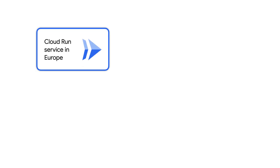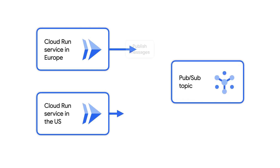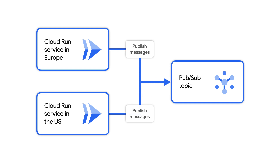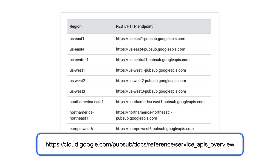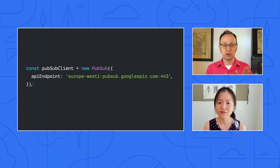Excellent. Now for the fourth and final question. My system has one Cloud Run service running in Europe and another running in the US, and both publish ordered PubSub messages to the same topic. Will ordering still work? Yes. If you specify the same regional endpoint when you create the publishers, you can look up the list of available regions here and pick one from the list. So if I use this code with this regional endpoint, all messages would be published in Europe, even if this code actually runs in the US. That's right.